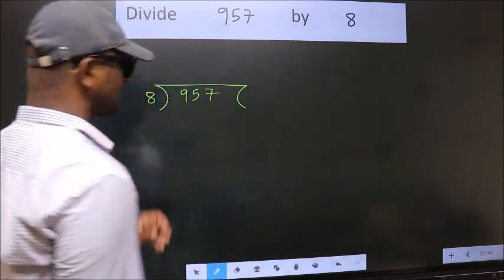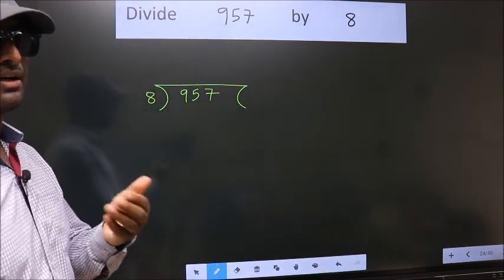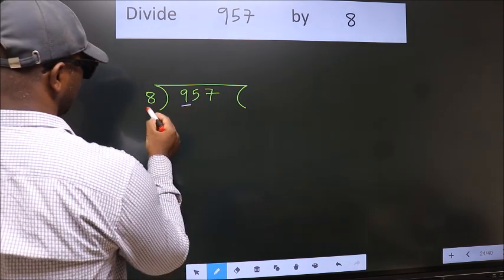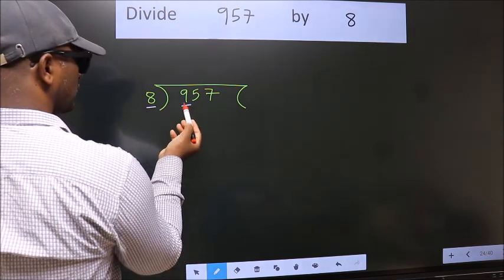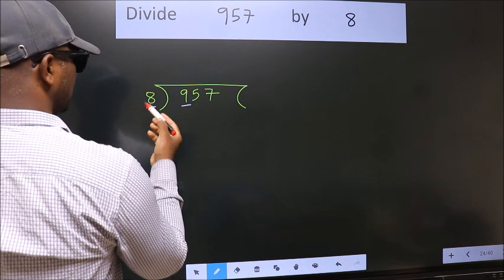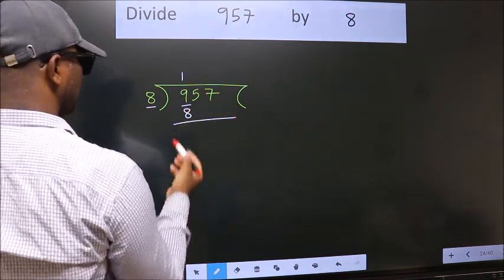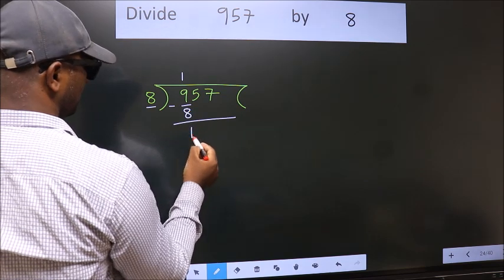This is your step 1. Next, here we have 9, here 8. A number close to 9 in the 8 table is 8 once 8. Now we should subtract. We get 1.